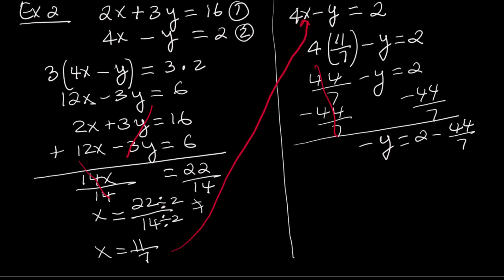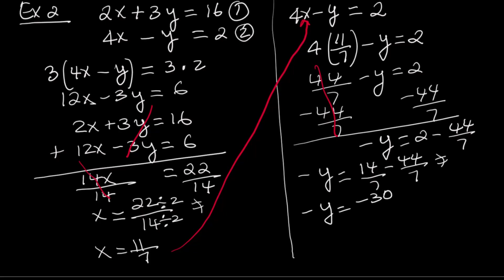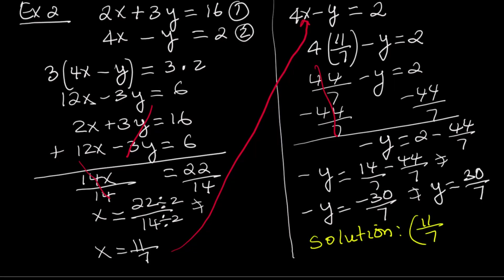To subtract, we need a common denominator — the common denominator is 7. Multiply 2 by 7 to get 14, so negative y equals 14 over 7 minus 44 over 7. By combining like terms, 14 minus 44 gives negative 30, so negative y equals negative 30 over 7. Multiply both sides by negative 1: y equals 30 over 7. The solution as an ordered pair is 11 over 7 comma 30 over 7.